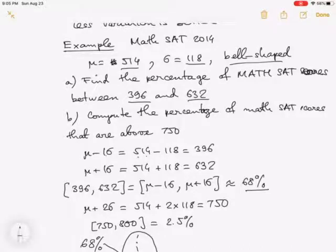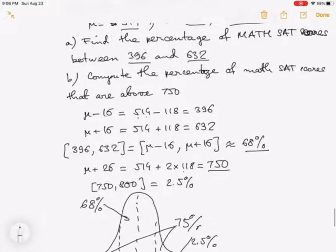Next, mu plus 2 sigma is 514 plus 2 times 118, equal to exactly 750. So for a sample that lies between mu minus 2 sigma and mu plus 2 sigma, about 95 percent of the data. About 95 percent of the data on that interval. That means about 5 percent of the data are outside that interval.